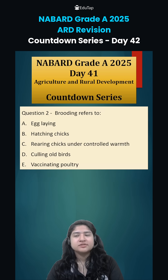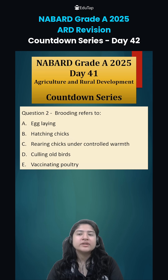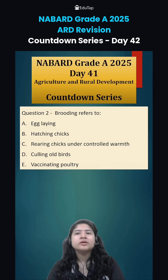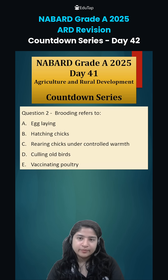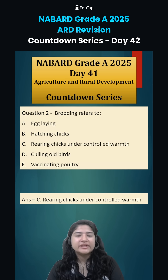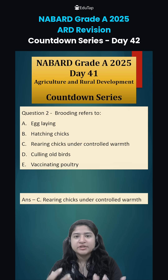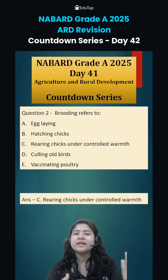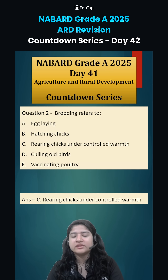Coming to question number 2, brooding refers to: once chicks come out of the egg, in the initial 4 to 6 weeks depending on the breed, they are not able to control their own body temperature, and that is why brooding is done. Chicks are exposed to a controlled temperature environment for a certain duration. It can be natural or artificial. In the artificial way, brooding machines are used, and in the natural way, the female brooder sits on the chicks to provide warmth.